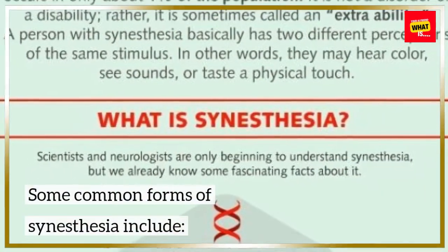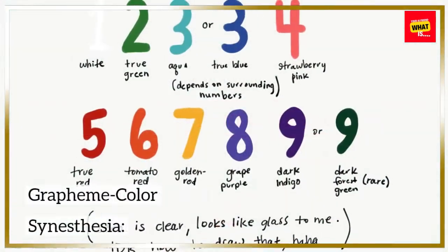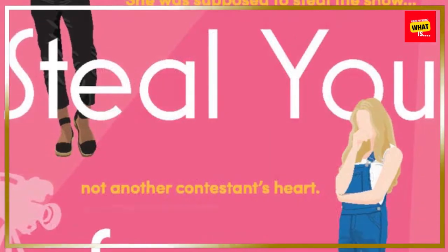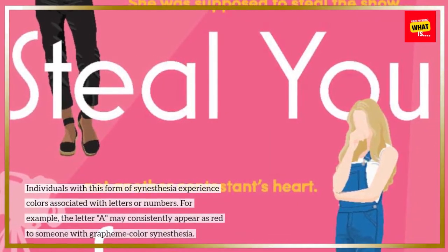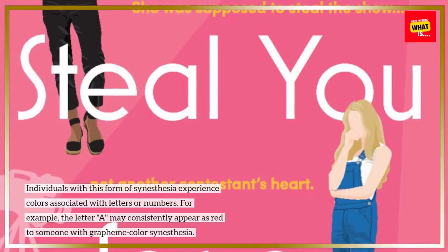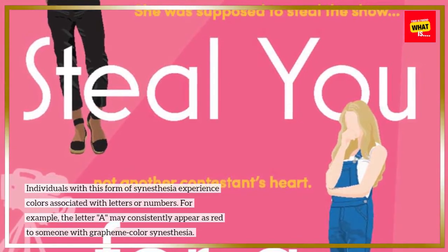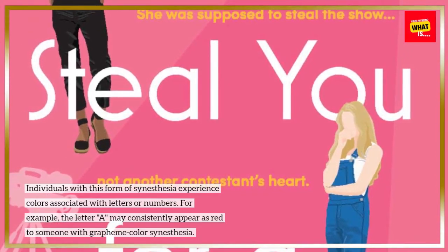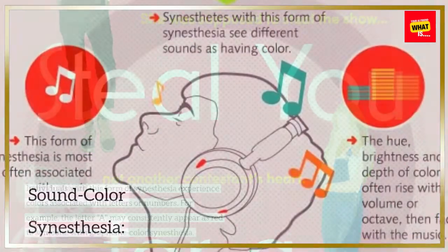Some common forms of synesthesia include grapheme-color synesthesia. Individuals with this form of synesthesia experience colors associated with letters or numbers. For example, the letter A may consistently appear as red to someone with grapheme-color synesthesia.